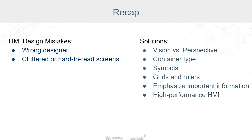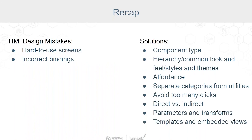To recap, some common HMI design mistakes are choosing the wrong visualization module — choosing between Vision or Perspective — and having cluttered or hard-to-read screens. Make sure you're thinking about that before you start building. Choose the right container type, use symbols, grids and rulers, and emphasize important information with color, position, size, isolation, and contrast. Incorporate a high-performance HMI philosophy. Other common mistakes are hard-to-use screens and incorrect bindings. The fixes are choosing the best component type, maintaining a consistent hierarchy, a common look and feel, and using styles and themes. Think in terms of clicks — consider affordance and separate categories from utilities. For bindings, think about whether you need direct or indirect, and use parameters, transforms, templates, and embedded views.